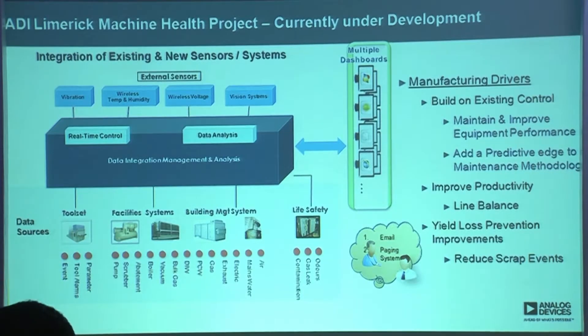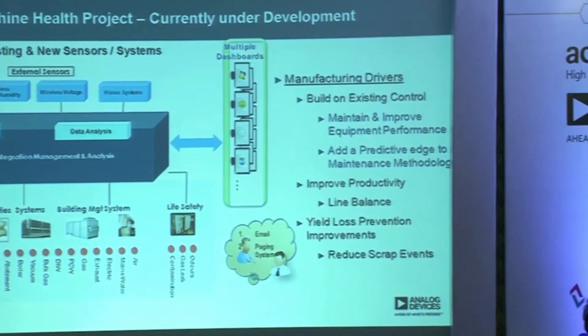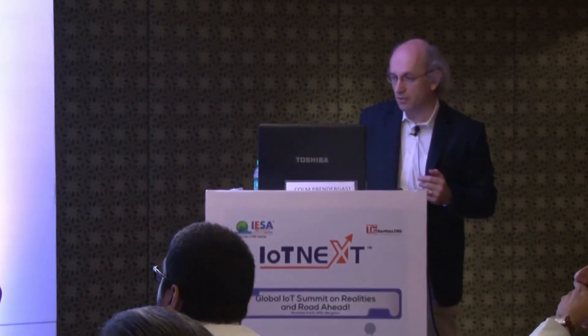On the bottom of our implementation architecture, we have existing sources of data — implanters, photolithographic equipment, and the basic tool sets there today. There's facilities equipment, building management systems, and on the top, a range of external sensors covering vibration, environment, voltage and line conditions, and vision systems for automated optical inspection. These sensors are increasingly ones we build ourselves and provide for customers. Various data analysis and collection systems pull all of this data together.